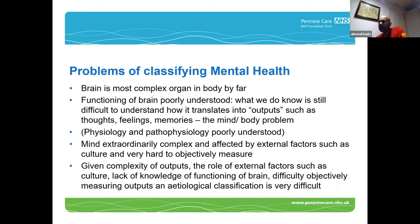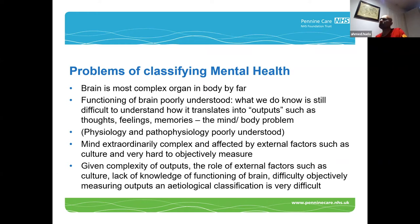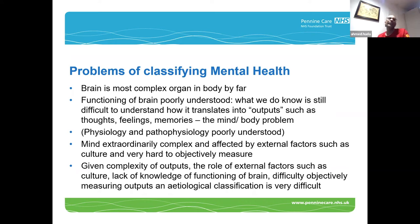What are the particular problems of classifying mental health? The brain is the most complex object in the universe that we know of — not just the most complex organ. A cardiologist deals with the heart, which basically just pumps. The brain is far more complicated and we don't really understand it. Almost everyone accepts that mental illness is related to the brain, but the exact relationship — the mind-body or mind-brain problem — hasn't been sorted out. Physiology and pathophysiology are poorly understood, and things like culture affect the brain and mind far more than they affect other parts of the body.